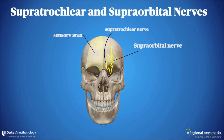The frontal nerve enters the orbit at the superior orbital fissure and divides into the supraorbital and supratrochlear branches. The supratrochlear nerve appears more medial through the supraorbital notch. These two branches supply sensory innervation to the frontal scalp and the forehead, the medial part of the upper eyelid, and the root of the nose.